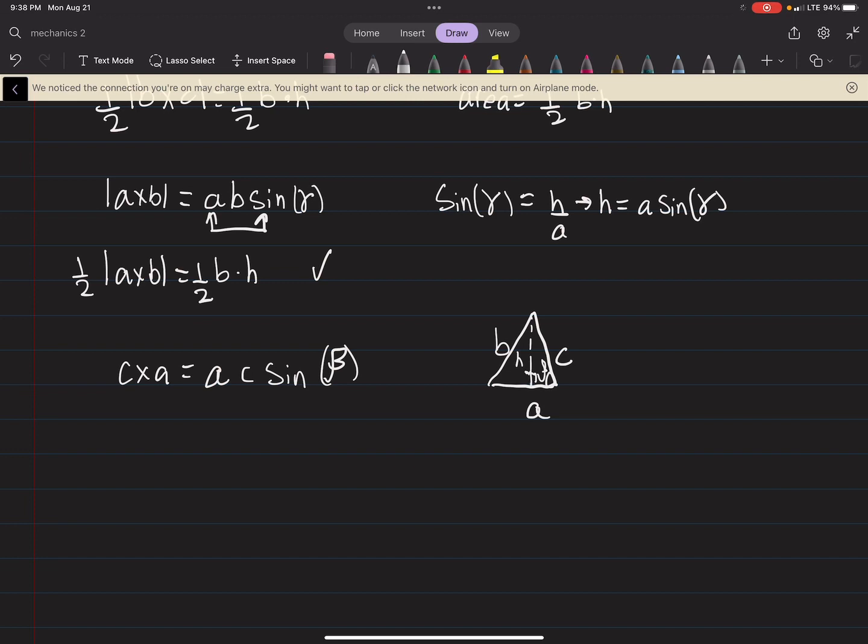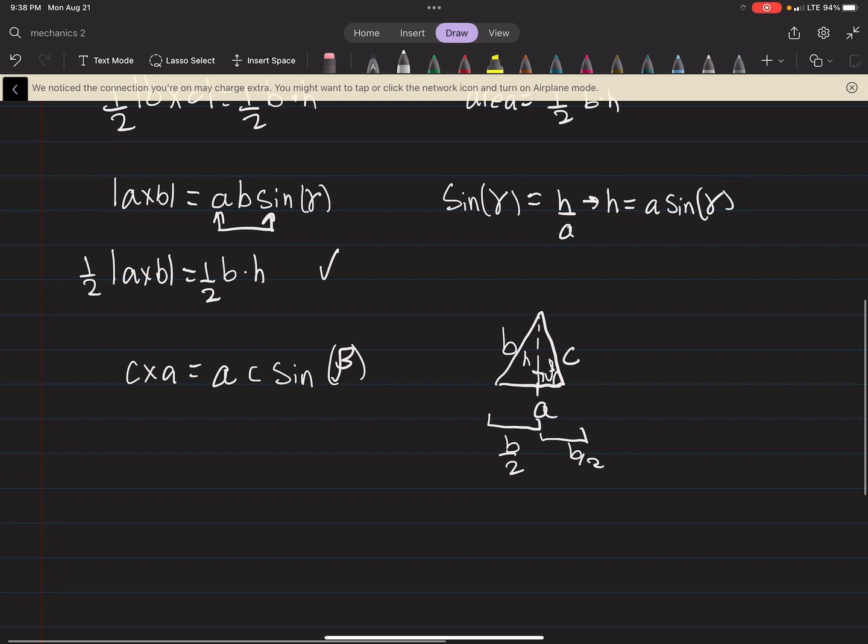And I should say that cutting it in the middle, this is the base divided by two. And this is the base divided by two because we dropped the perpendicular right there in the middle there. But what you can see is, again, the height. The height is going to be the hypotenuse times sine beta.